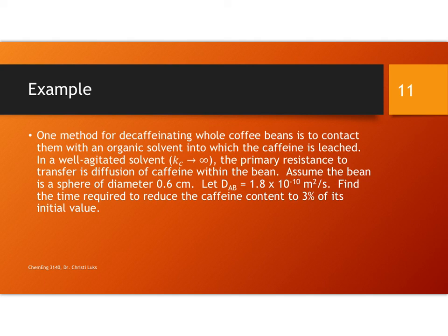If we assume that the bean is a sphere of diameter 0.6 centimeters and the diffusivity is going to be 1.8 times 10 to the minus 10th meter squared per second, we want to estimate the time required to reduce the caffeine at the center of the bean to 3% of its initial value. And so we are going to treat this at the center.